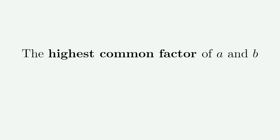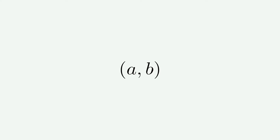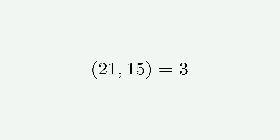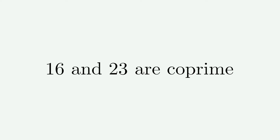The highest common factor of a and b is the highest common factor of a and b, and we're going to write it like this. For example, the highest common factor of 21 and 15 is 3. If the highest common factor of two integers is 1, we say that they are co-prime. For example, 16 and 23 are co-prime.